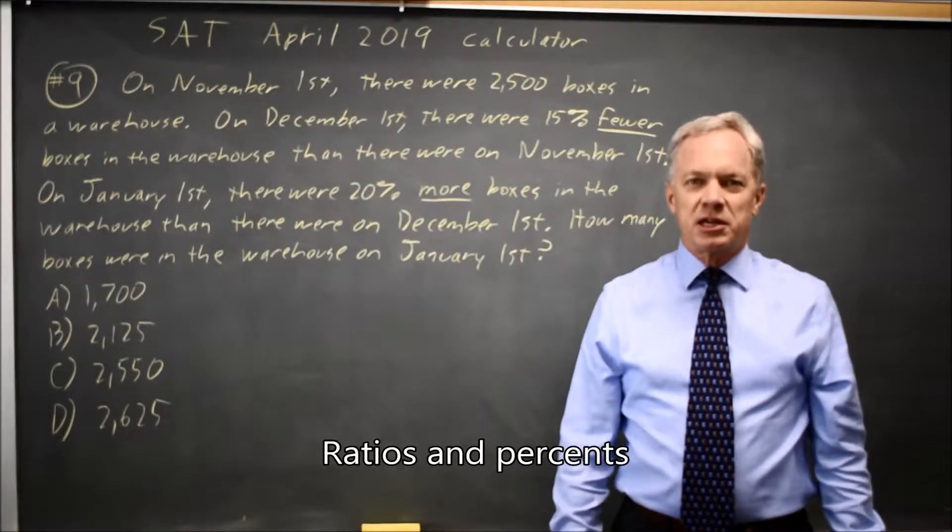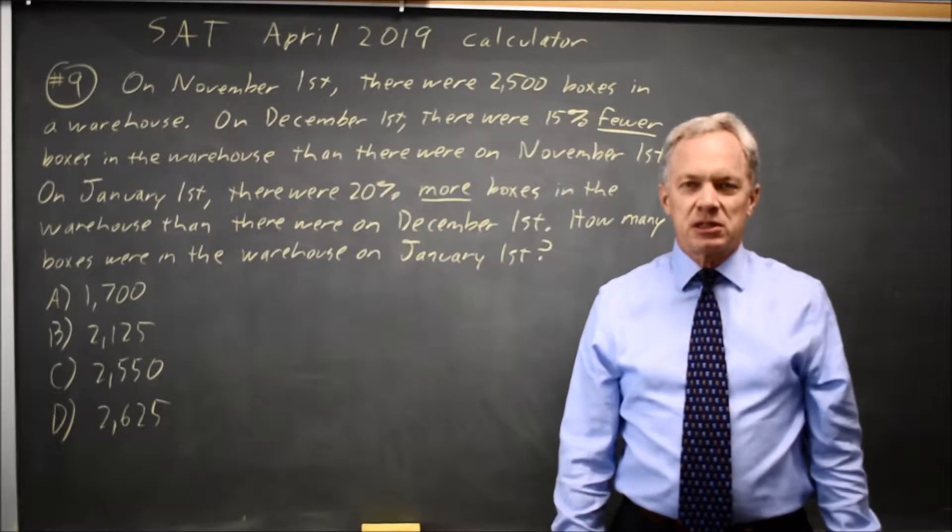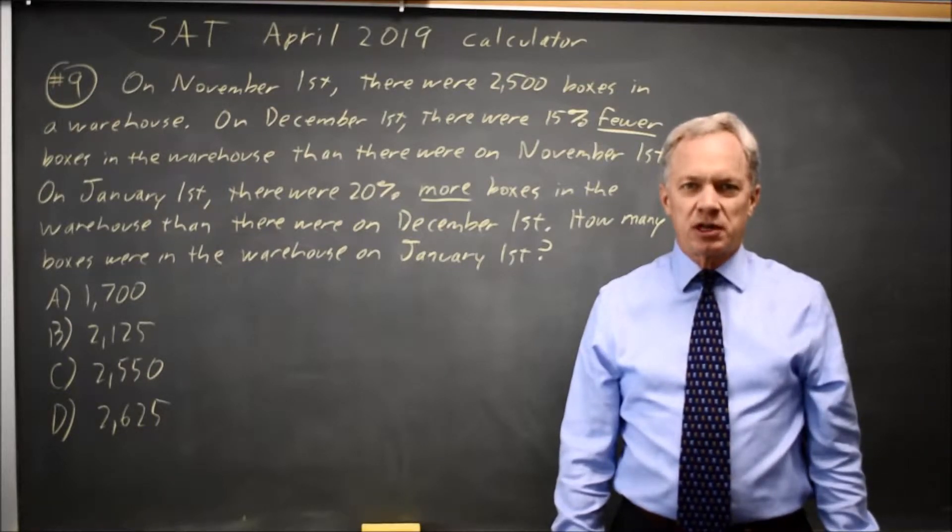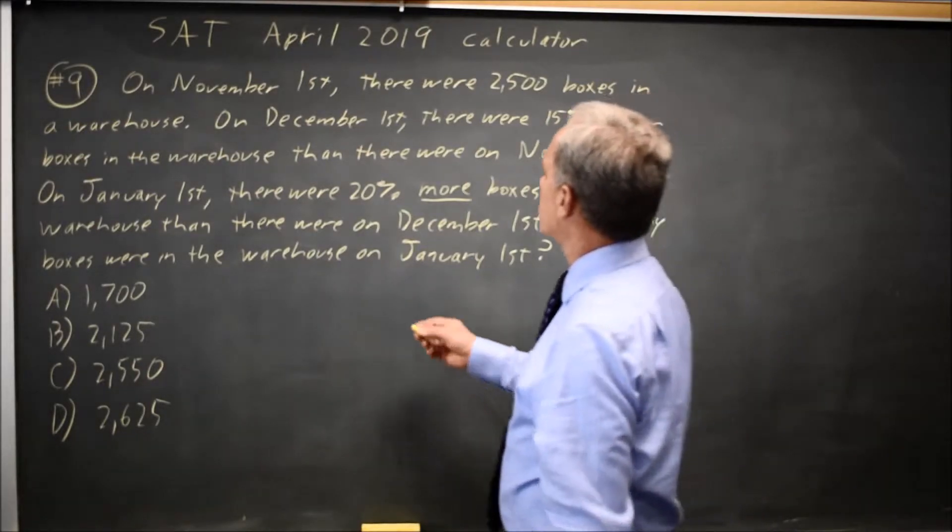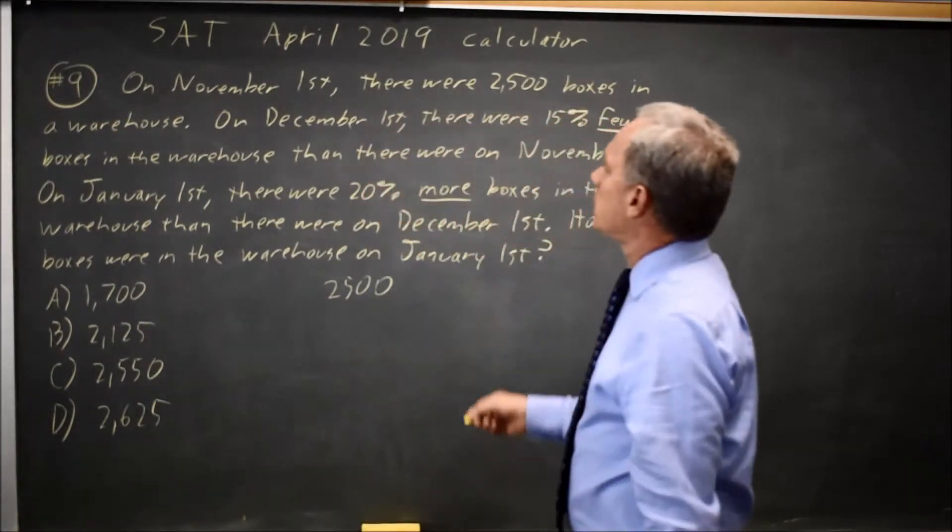This is calculator question number 9 from the April 2019 SAT. College Board describes boxes in a warehouse and how the quantity of boxes changes from one month to the next. So we start with 2500 in November.